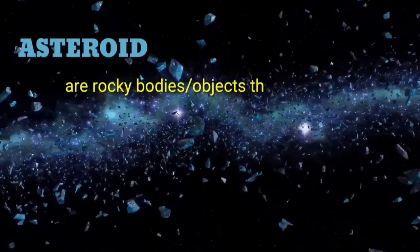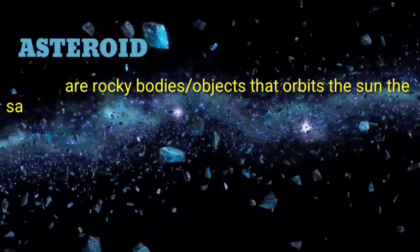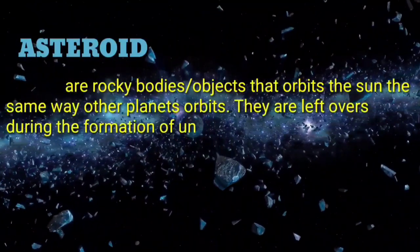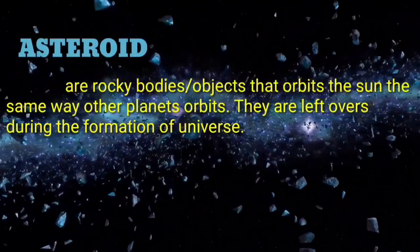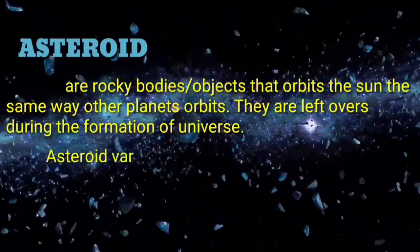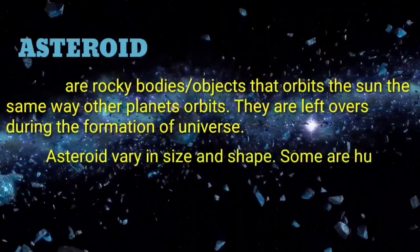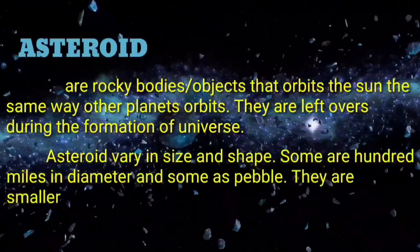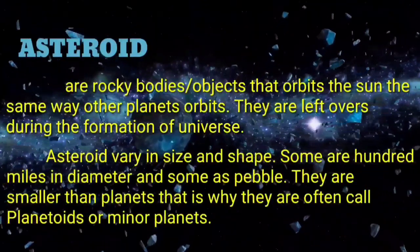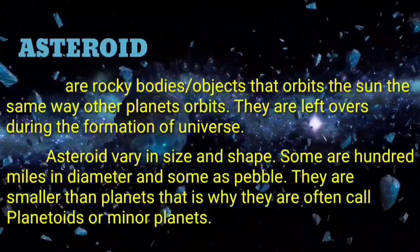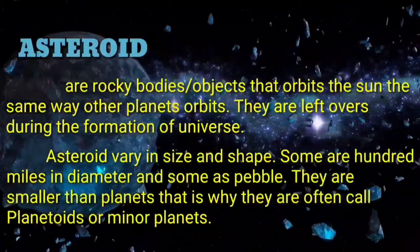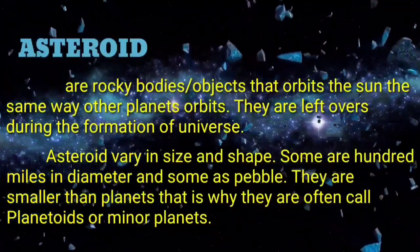Asteroids are rocky bodies or objects that orbit the Sun the same way other planets orbit. They are leftovers during the formation of the universe. Asteroids vary in size and shape. Some are 100 miles in diameter and some are as small as a pebble. They are smaller than planets, which is why they are often called planetoids or minor planets.